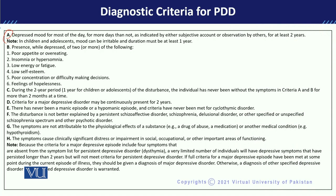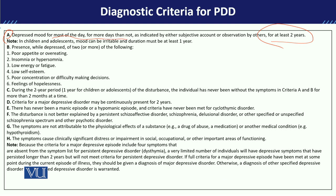Criteria A states that for adults, the depressed mood must be present for at least a two-year time period, with depressed mood most of the day, for more days than not, as indicated by the person.